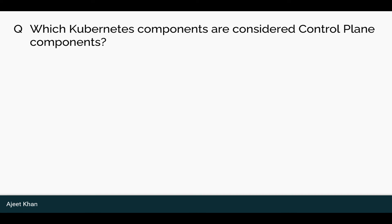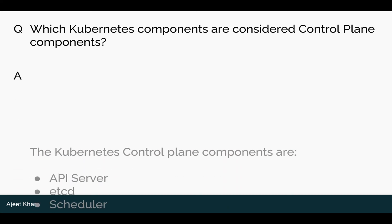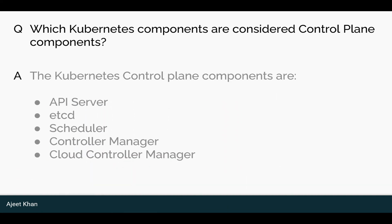Which Kubernetes components are considered control plane components? The Kubernetes control plane components are: API Server, ETCD, Scheduler, Controller Manager, and Cloud Controller Manager.